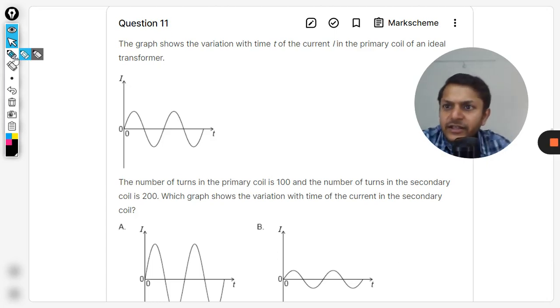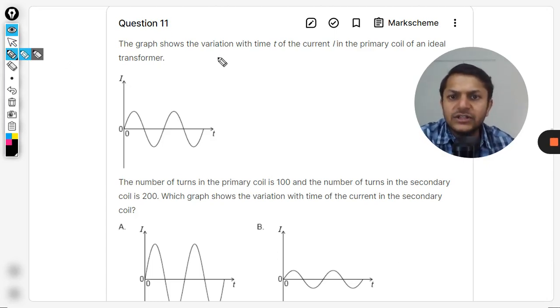Hey students, let's see what is there in this question. The graph shows the variation with time t of the current i in the primary coil of an ideal transformer. Ideal transformer means that the efficiency is 100%, there is no power loss.